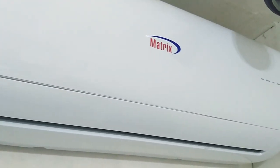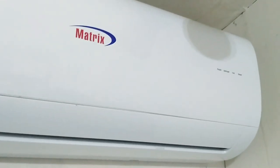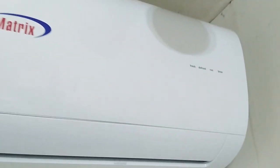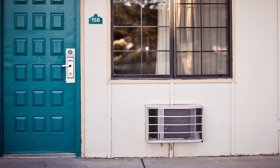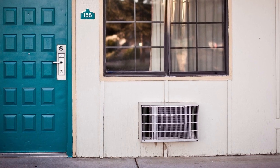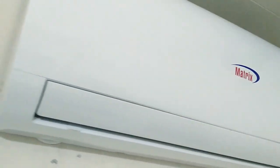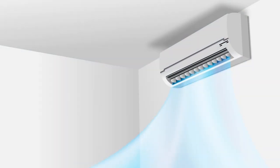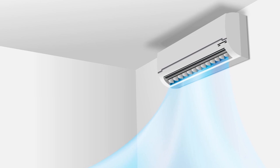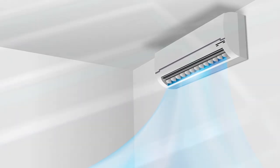What we have is a Matrix 1.5 horsepower split type system. Regardless, both split type and window type models all have air filters inside which trap dust and particles from the air. However, a common misconception is that by just cleaning the air filters, you're already good. Actually, there are other parts of the unit you should also clean regularly to ensure you and your family are breathing in cool and clean air.